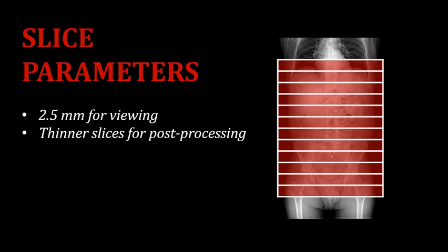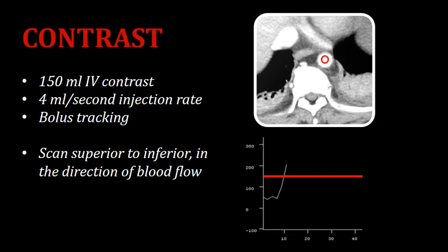Since we are looking at the abdominal aorta, we'll scan from above the level of the diaphragm all the way down to below the level of the pubic symphysis. If we were scanning just the abdomen, we would stop the scan short of the pubic symphysis, but that's pretty uncommon. Almost always, abdominal aorta scanning will include both the abdomen and the pelvis.